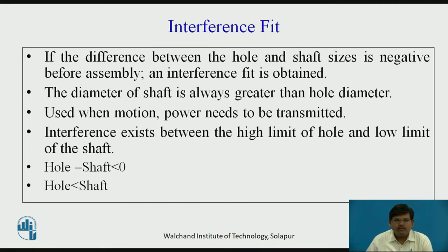If the difference between the hole and shaft size is negative before assembly, interference fit is obtained. That means the diameter of the shaft is always greater than the hole diameter. Considering the tolerances, the maximum size of the hole is always less than the minimum size of the shaft. This kind of fit is used when you want to transfer power from one shaft to another, or need to transmit certain motion. Couplings and bearings are fitted on the shaft using this kind of fit.